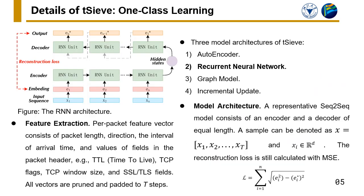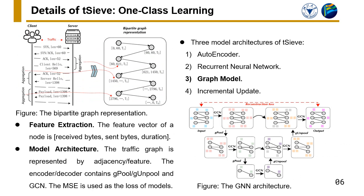The second model is RNN. It uses a sequence-to-sequence structure to represent the sequential features of traffic samples. The third model is GNN. It learns the features of samples based on their traffic graph.